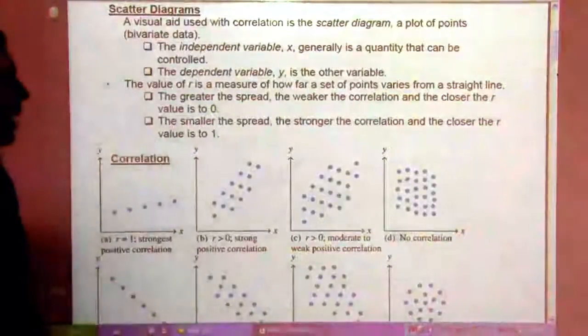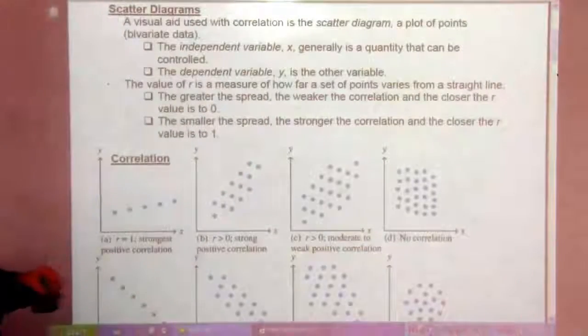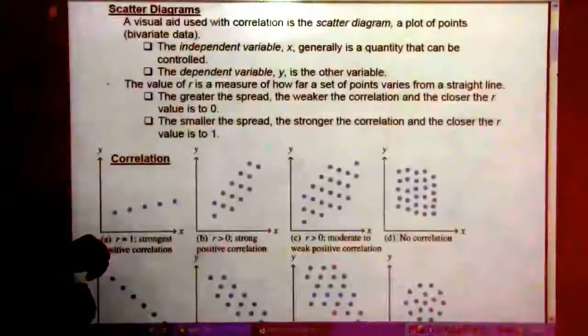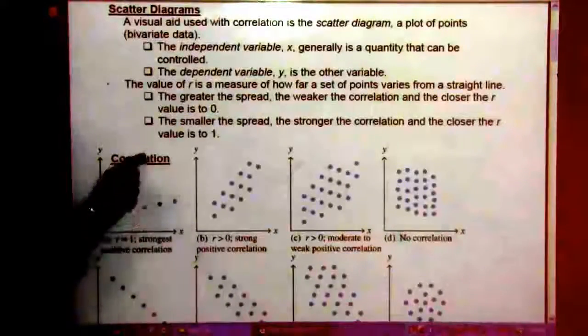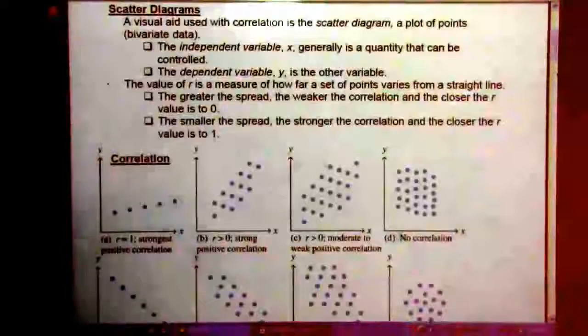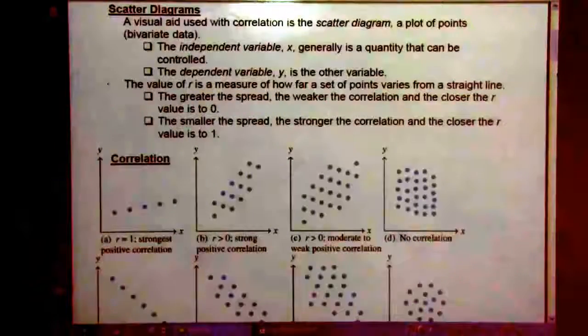The dependent variable Y is the other variable. The value of R is a measure of how far a set of points varies from a straight line. The greater the spread, the weaker the correlation and the closer the R value is to zero. The smaller the spread, the stronger the correlation and the closer the R value is to one.